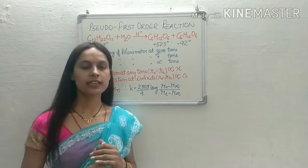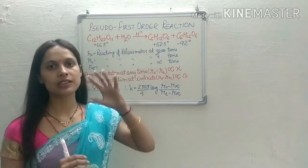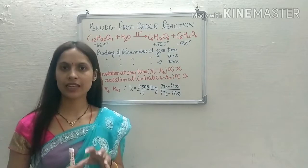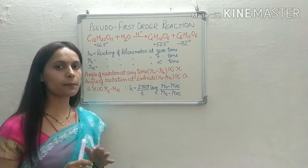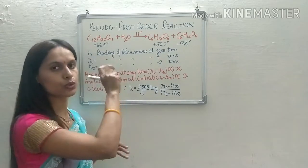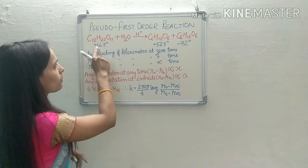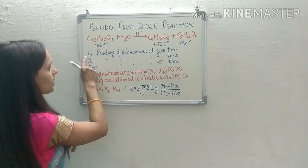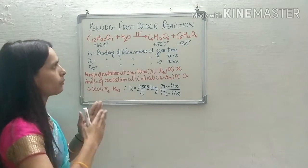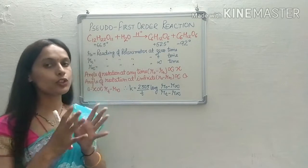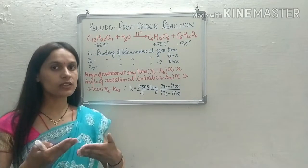The kinetics is studied using a polarimeter, because we are dealing with rotation of plane polarized light. R0 is the reading of the polarimeter at zero time. Rt is the reading at any time T — as some sugar converts to glucose and fructose, the levorotatory fructose reduces the total reading below +66.5°.